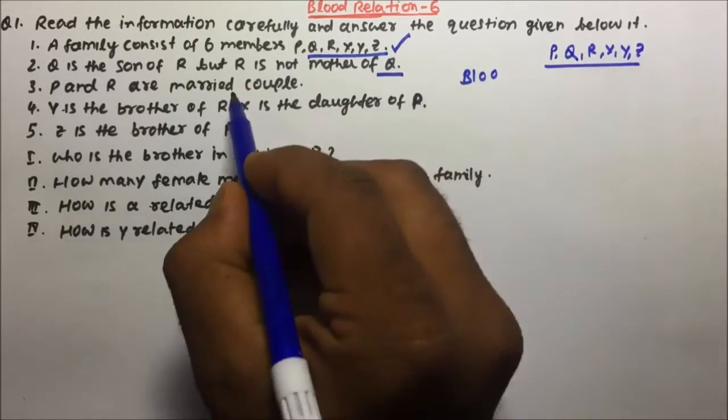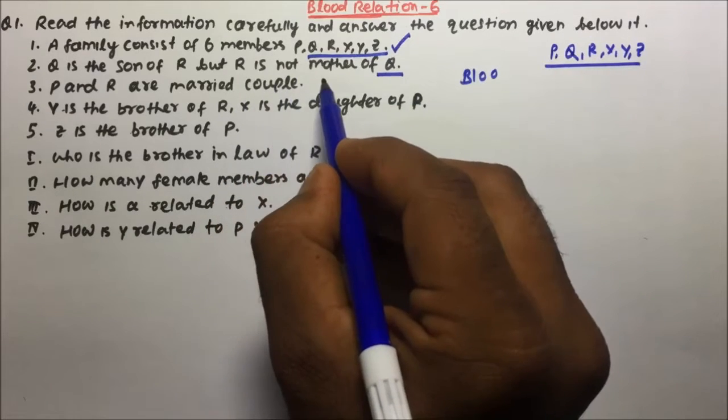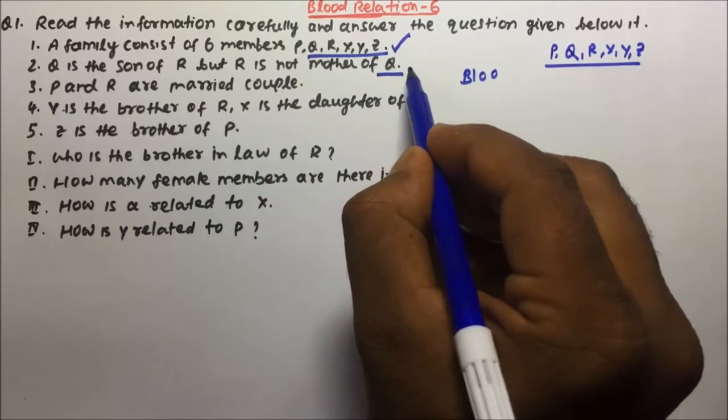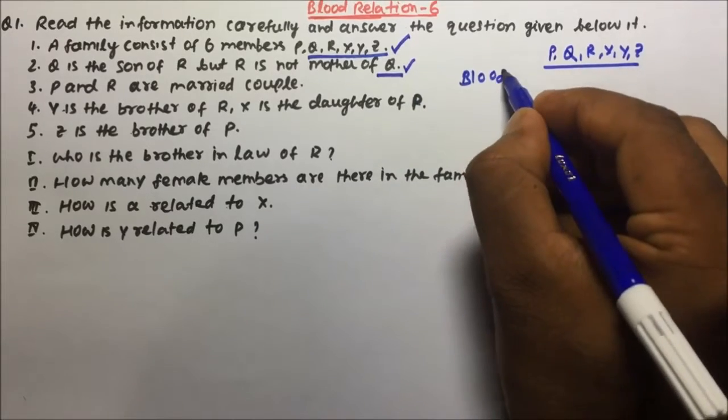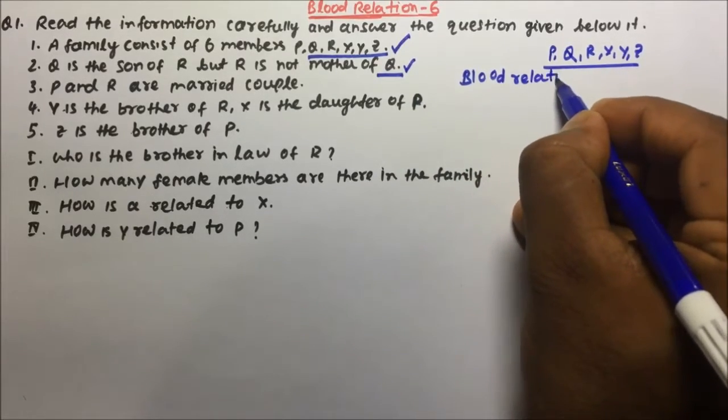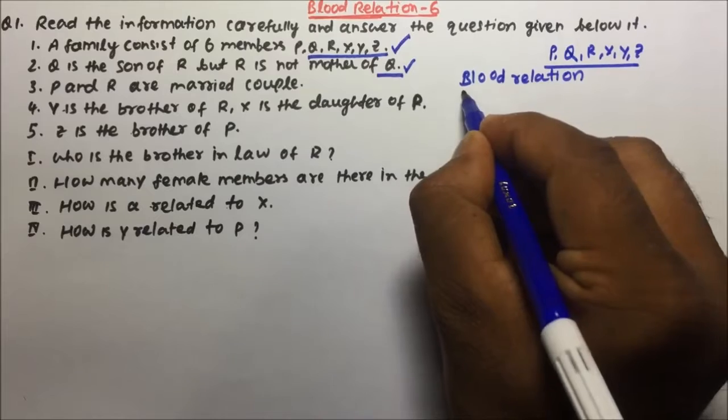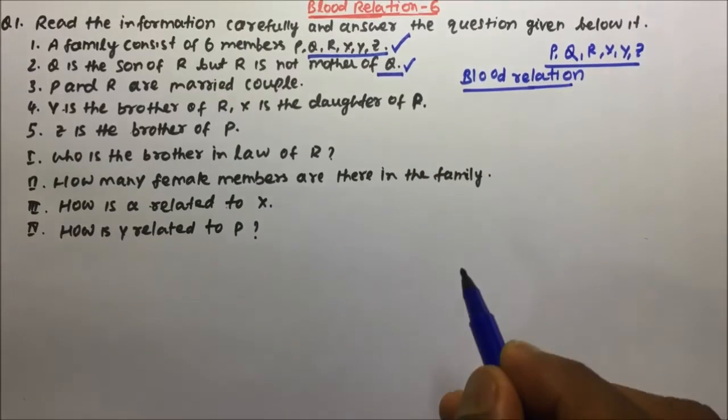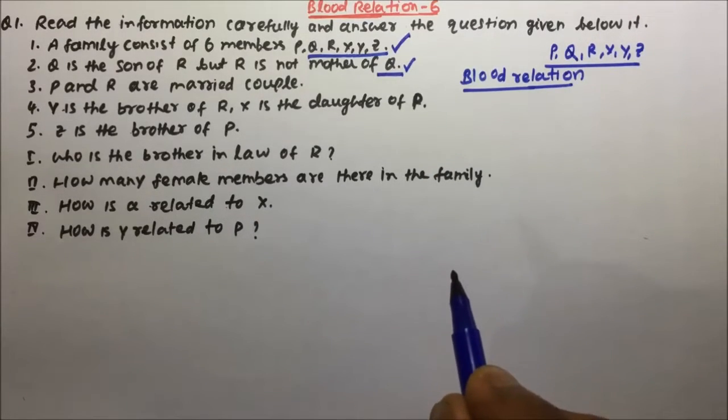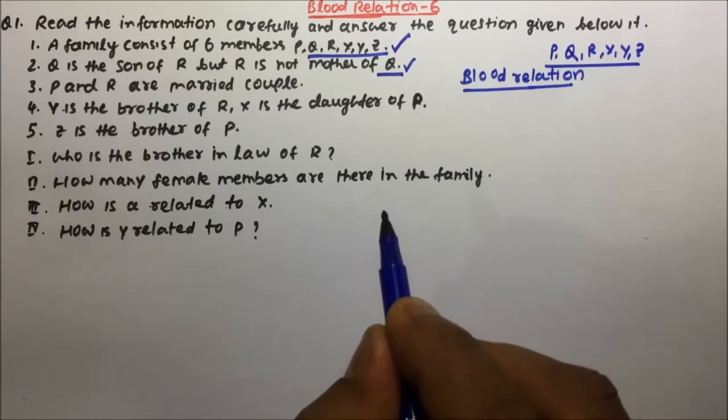Now the second statement is: Q is the son of R but R is not the mother of Q. So for solving this question we need to draw a blood relation tree. Once we draw the blood relation tree, then we will be easily able to tell the relation between P, Q, R, X, Y, and Z. So let's start with the blood relation tree.